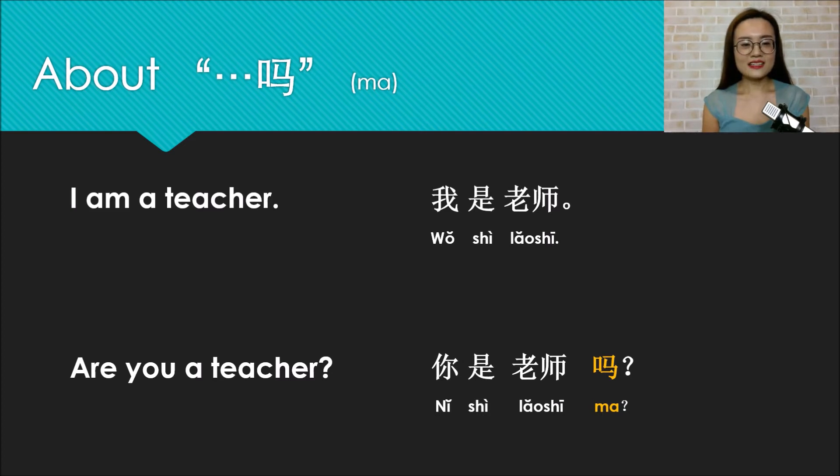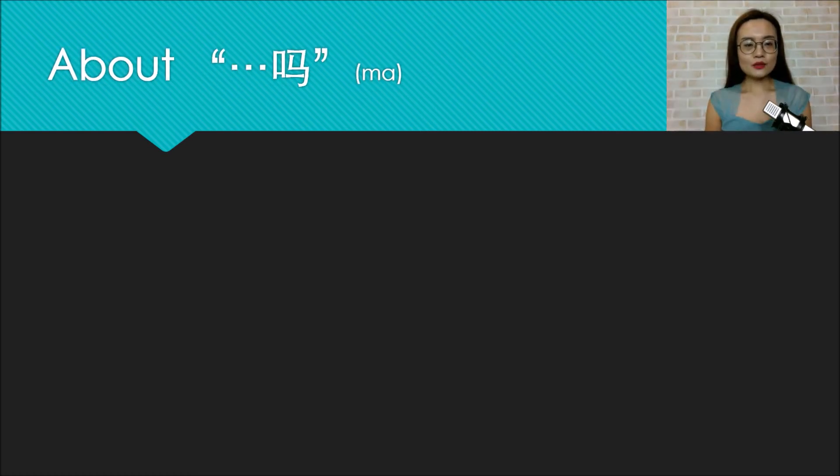In Chinese it's ni shi laoshi ma. This type of sentence is easy, different from English. We don't need to change the positions of the subject and verbs like I am, are you. We just change the subject from wo (I) to ni (you) and then add a question mark ma in the end. So remember, ma is a yes or no simple question mark.